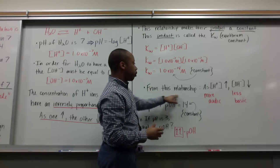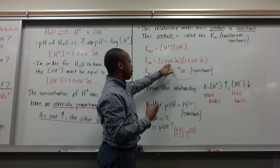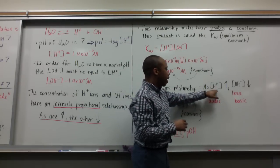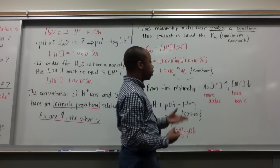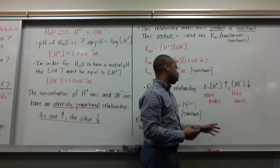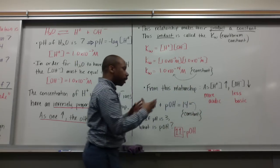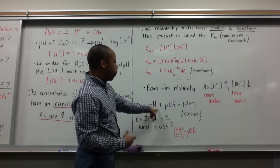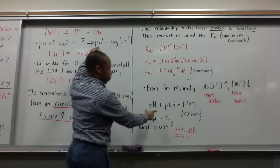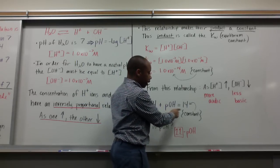From this relationship, using the inverse relationship, as H plus concentration increases, OH minus concentration decreases. I become more acidic and less basic. If I take the pH of this and the pOH of that, plug this in and get my pH, pH plus pOH equals 14.